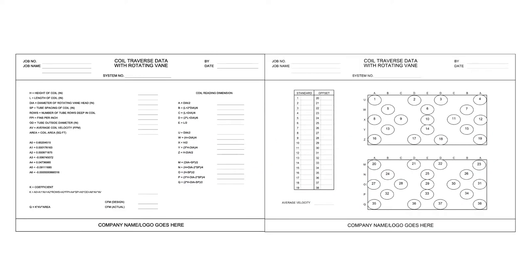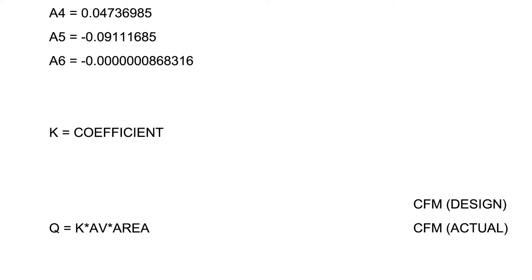The coil traverse data with rotating vane form was developed to calculate the coefficient algorithm represented by K, known as the K factor. The K factor is automatically calculated using the following formula.